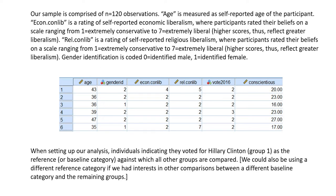When setting up our analysis, individuals indicating they voted for Hillary Clinton — those in group one on the vote variable — are treated as a reference or baseline category against which all other groups are being compared. We could also use a different reference category if we had interest in comparisons between a different baseline category and the remaining groups.